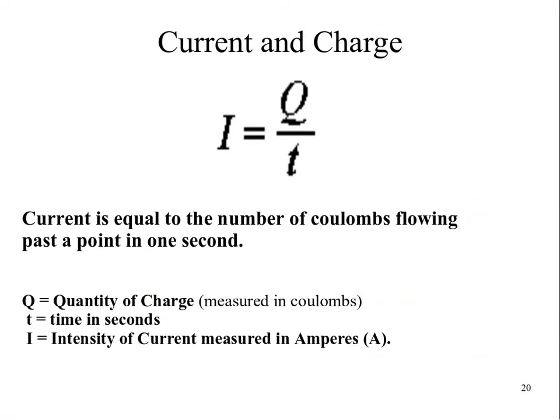Now, current is the flow of charge, and it is the rate at which charge moves. Current is equal to the number of coulombs flowing past a point in one second. We can describe that by this formula. Current equals charge divided by time.